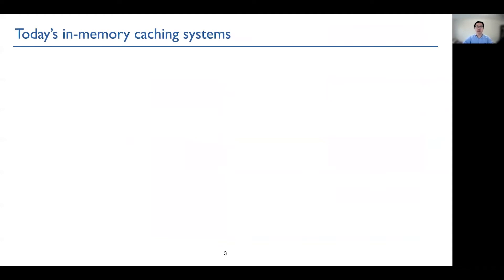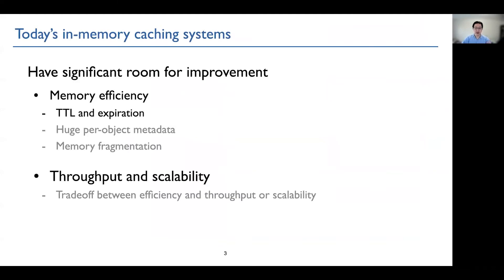We observed that today's in-memory caching systems have significant room for improvement, both in terms of memory efficiency, throughput, and scalability. And one of the reasons why memory is not efficiently used is because of TTL and its expiration issue, which is the focus of today's talk. For the remaining ones we have discussed in the paper.